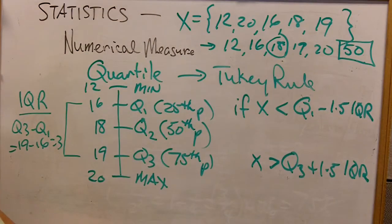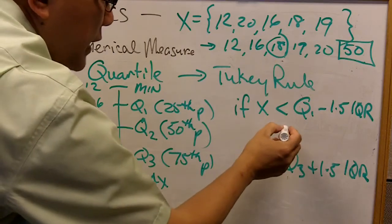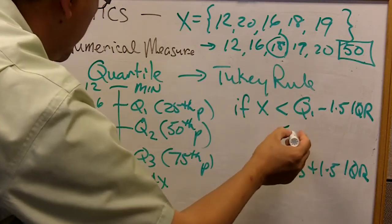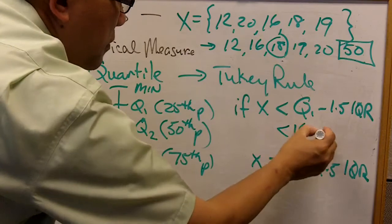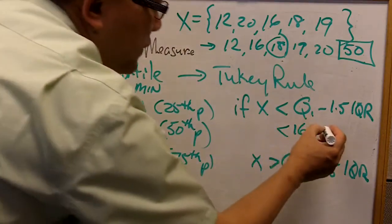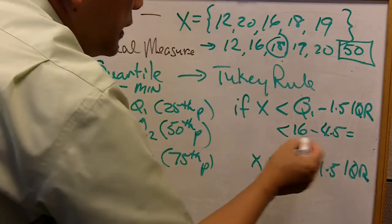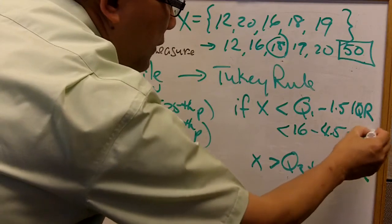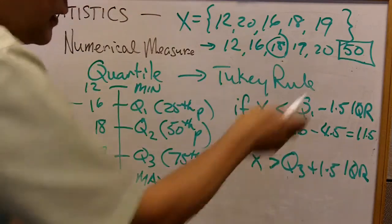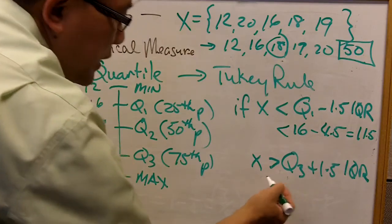So let's plug in numbers. Is 50 less than Q1, which is 16, minus 1.5 times 3 (which is IQR)? That's 1.5 times 3 equals 4.5. So in this case, that would be equal to 11.5. Obviously, 50 is not less than 11.5. What about the other side?